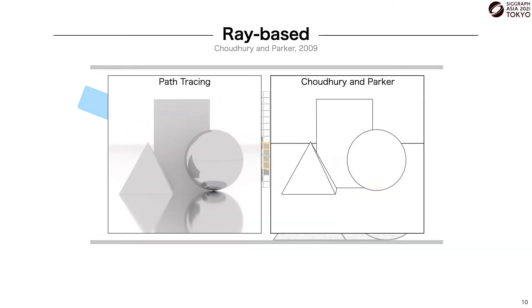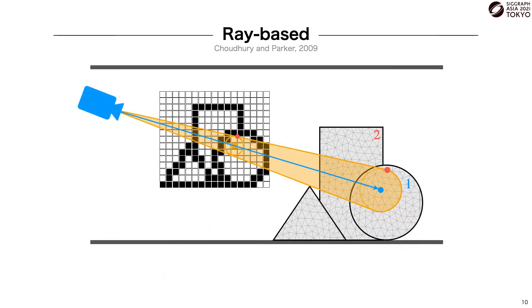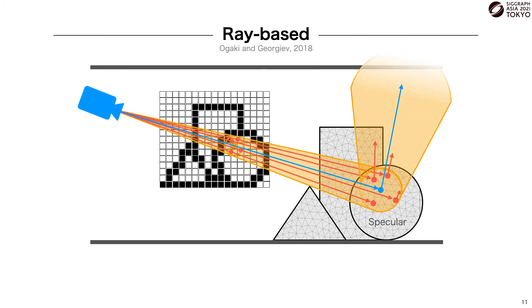Their method has some drawbacks, though. It's limited to directly visible surfaces, and due to its fixed stencil of rays, it's prone to aliasing. Ogaki and Georgiev extended the work of Chaudry and Parker to include lines seen through specular reflections and refractions. And they also showed that randomly drawn ray samples can be used instead of a stencil to reduce aliasing artifacts.